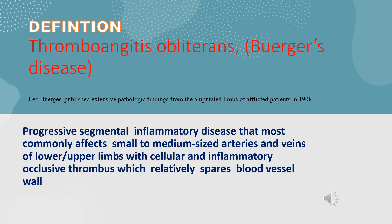So what is the definition of Buerger's Disease? Buerger's Disease is a progressive, segmental, inflammatory disease that most commonly affects small to medium-sized arteries and veins of upper and lower limbs, with cellular and inflammatory thrombus, which relatively spares the blood vessel wall.